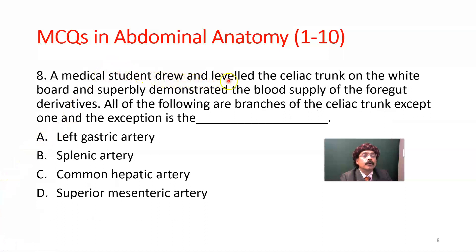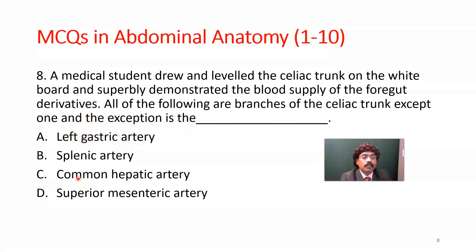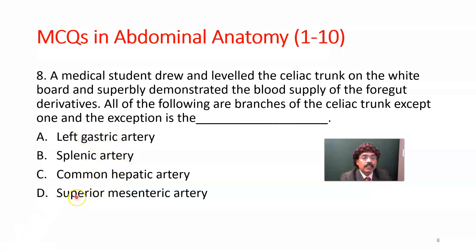Question number seven: A medical student drew and labeled the celiac trunk on a whiteboard, demonstrating the blood supply of the foregut derivatives. All of the following are branches of the celiac trunk except one. The celiac trunk has three branches: left gastric artery, splenic artery, and common hepatic artery. Therefore, the superior mesenteric artery is not a branch of the celiac trunk — it is the artery for the midgut. D — superior mesenteric artery — is the exception.